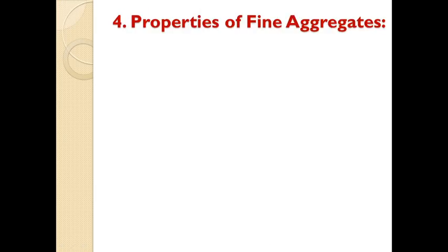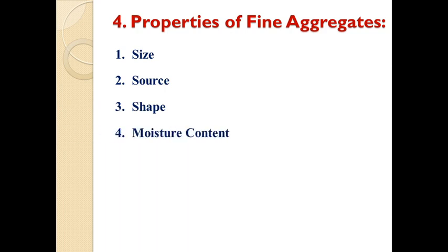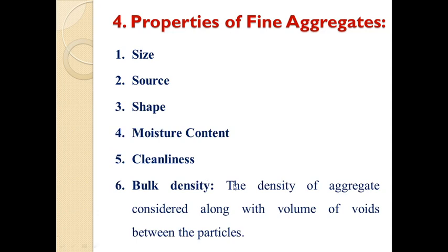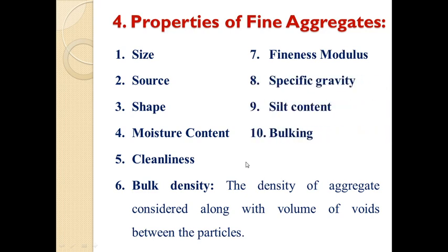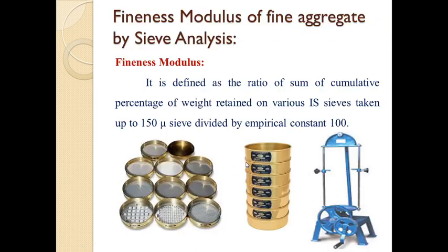Next are the properties of fine aggregates. These include: size, source, shape, moisture content, cleanliness, bulk density (meaning the density of aggregate considered along with the volume of voids between particles), fineness modulus, specific gravity, silt content, and bulking. Now let us look at the physical property of fineness modulus, which is calculated using sieve analysis.